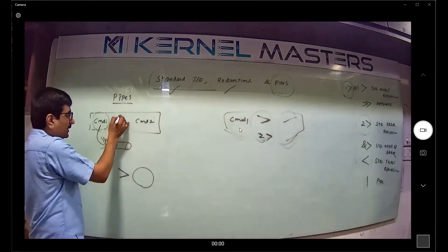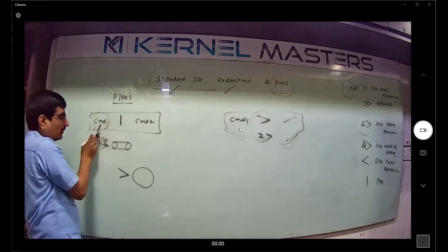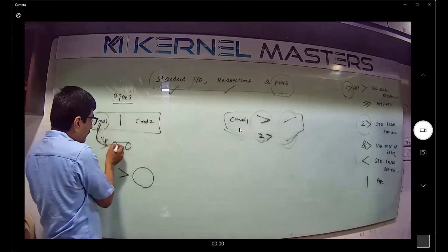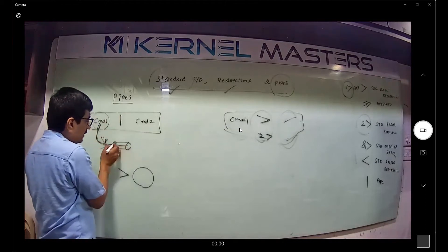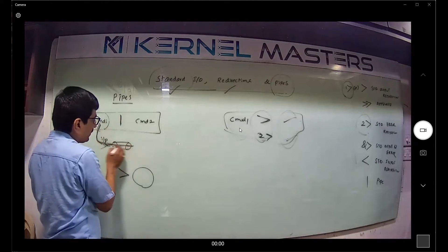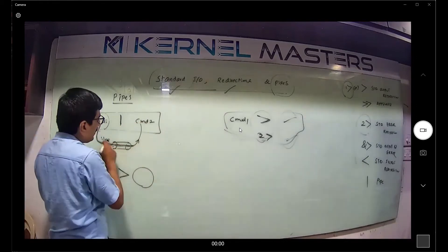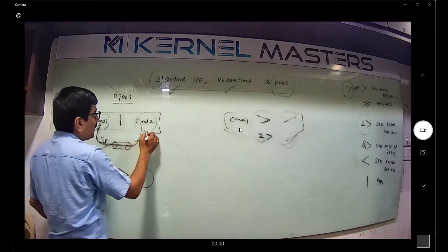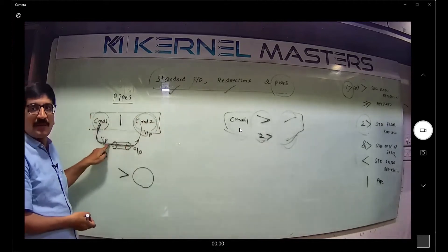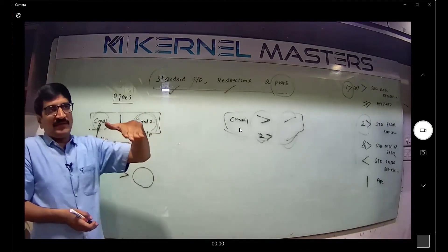The command is not a file command, because with pipe, the first command output — for example ls command output — enters as input of the pipe. The pipe is the communication medium: data is written on one side and transferred to the other side. The second command takes its input from the output of the pipe. So the first command output becomes the input of the second command.